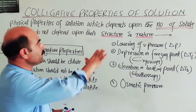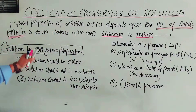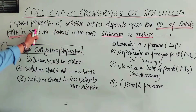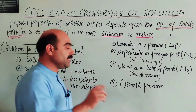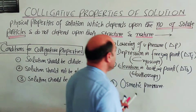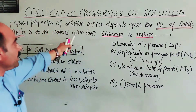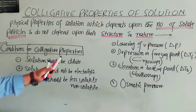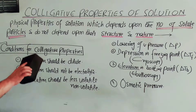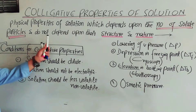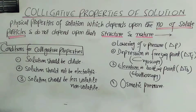So, the properties called colligative properties depend upon the number of solute particles and do not depend upon the nature and structure of the solute. Clear?